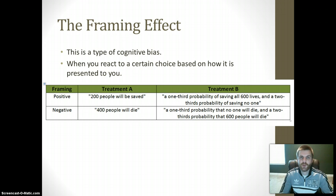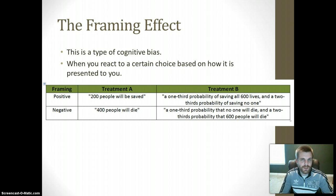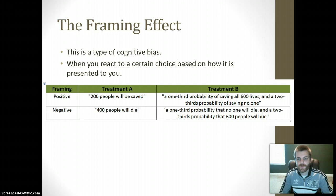In negative framing, if people are given an option of choosing between 400 people die or a one-third probability that no one will die and a two-thirds probability that 600 people will die, both of those things are referring to the same outcome, but now people actually choose treatment B. So positive framing leads people to choose A, while negative framing leads more people to choose treatment B.